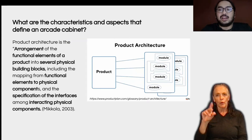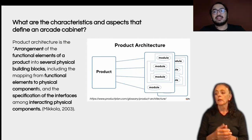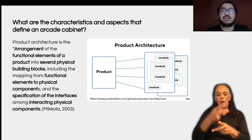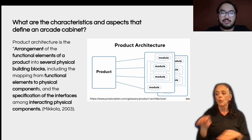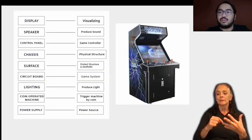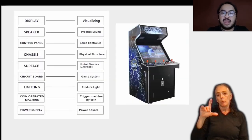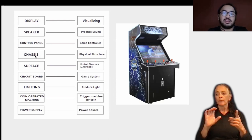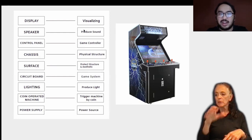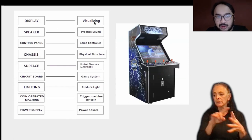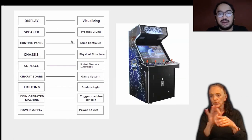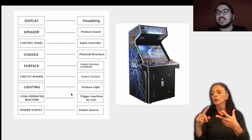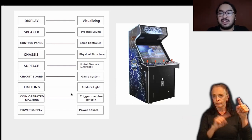In order to answer that, there is a design framework called product architecture, which arranges the functional elements of a product into several physical blocks. For an arcade cabinet, those physical blocks are the display, speaker, and controls — each with their function: display for visualizing, speaker for producing sound, and controls for input. Those are the components that define an arcade.